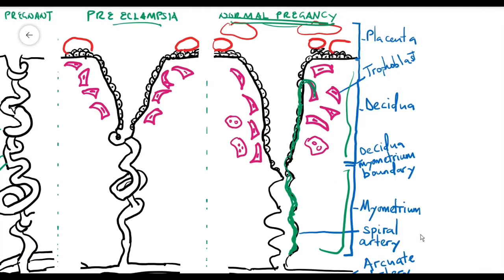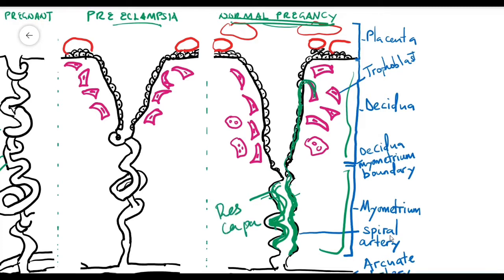This endovascular trophoblast invasion replaces the endothelial lining in the muscular arterial walls by fibrinoid formation. The spiral arteries then become distended and funnel-shaped. These physiological changes transform the spiral arteries into low resistance, high capacitance, and wide bore vessels, resulting in a high-flow system and adequate blood supply perfusion to the placenta bed.